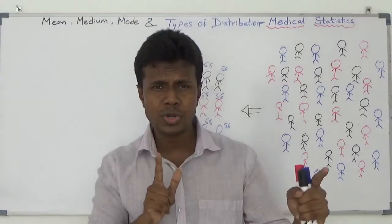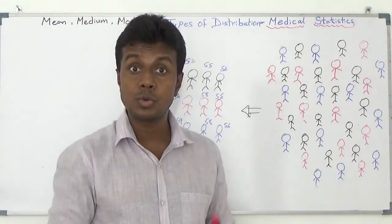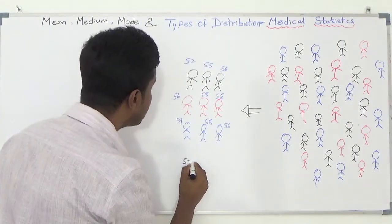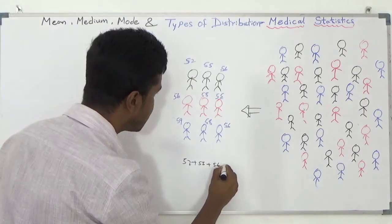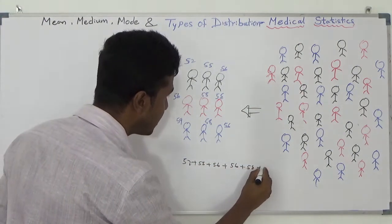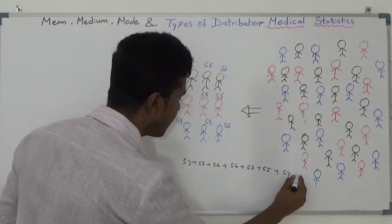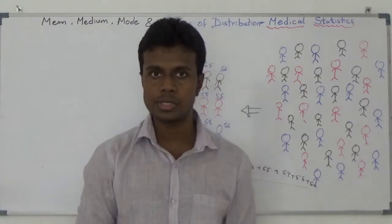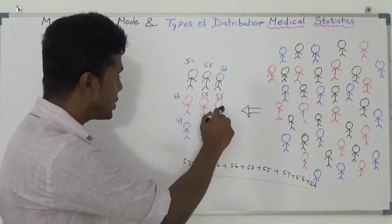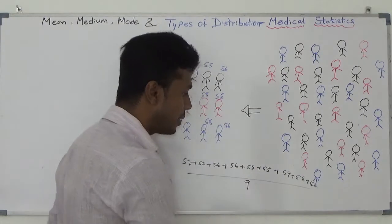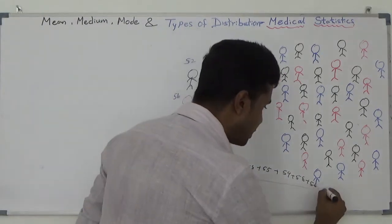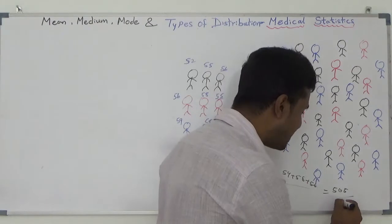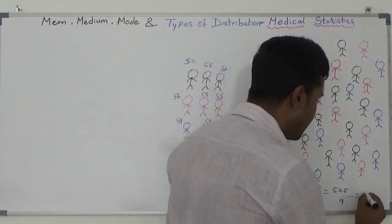What I am going to do is calculate all the ages together and divide by the number of individuals. So I calculate: 52 + 55 + 56 + 56 + 58 + 55 + 59 + 58 + 56. How many individuals are there? 1, 2, 3, 4, 5, 6, 7, 8, and 9. I have to divide by 9.